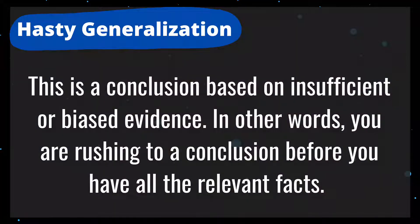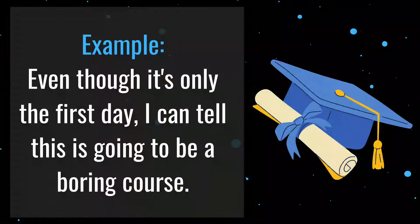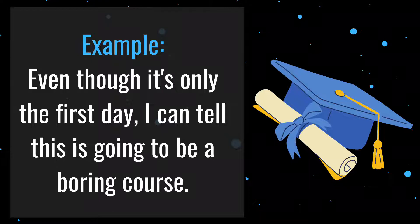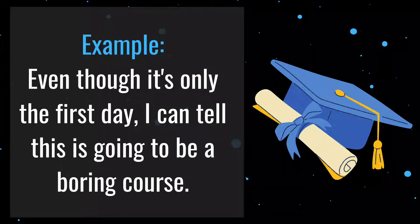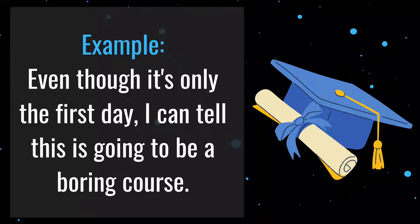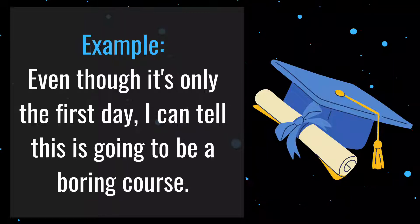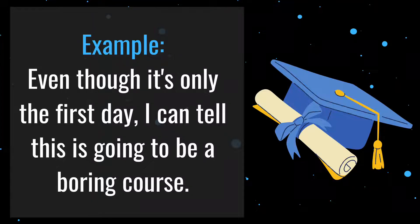Number 2 is hasty generalization. This is a conclusion based on insufficient or biased evidence. In other words, you are rushing to a conclusion before you have all the relevant facts. For example: even though it's only the first day, I can tell this is going to be a boring course. The author is basing his evaluation of the entire course on only the first day. To make a fair evaluation, the author must attend several classes, examine the textbook, talk to the professor, or talk to others who have previously finished the course in order to have sufficient evidence.